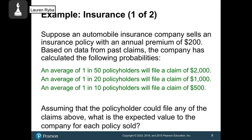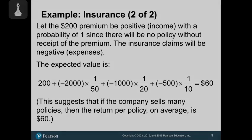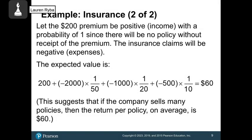A common example with expected value is in insurance. Suppose an automobile insurance company sells an insurance policy with an annual premium of $200. Based on data from past clients, the company has calculated the following probabilities. About 1 in 50 will file a claim of $2,000, 1 in 20 will file a claim of $1,000, and 1 in 10 will file a claim of $500. Assuming that the policyholder could file any of the claims above, what is the expected value to the company for each policy that is sold? We will start with the fact that the company makes $200 off of this person. Now, they will have to pay out $2,000 every 1 out of 50 people.